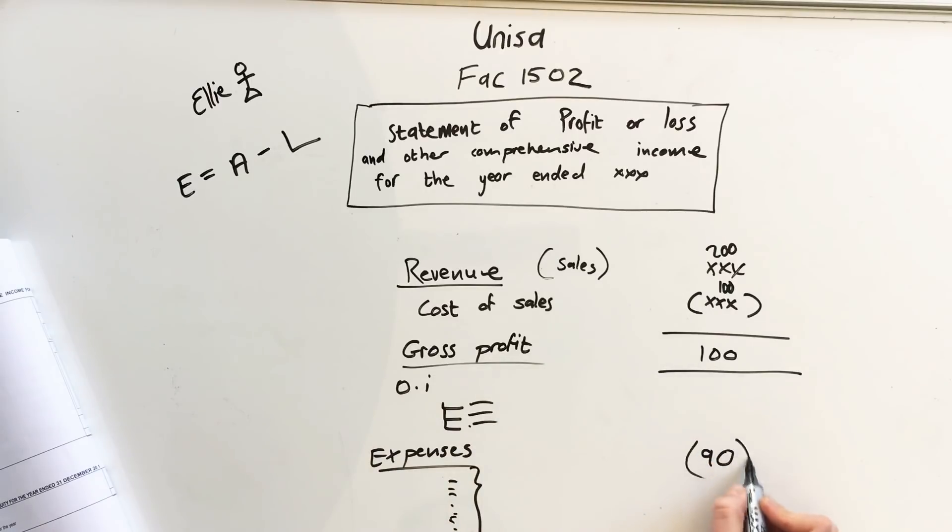You minus your expenses, so it's in brackets again, minus, and that answer gives you the profit for the year. And that is what a statement of profit or loss looks like.